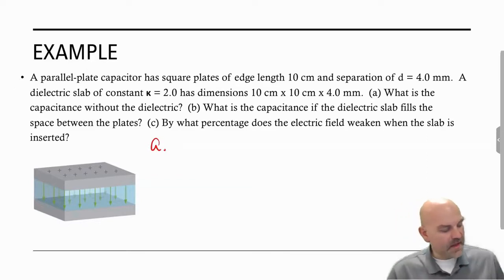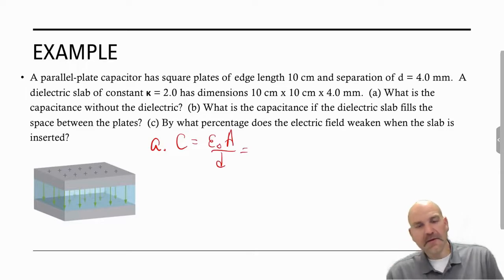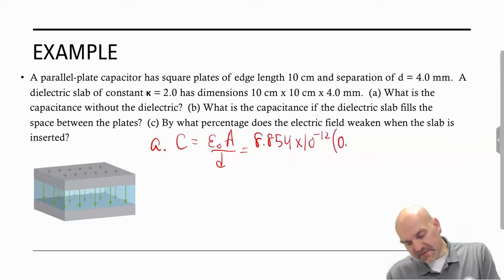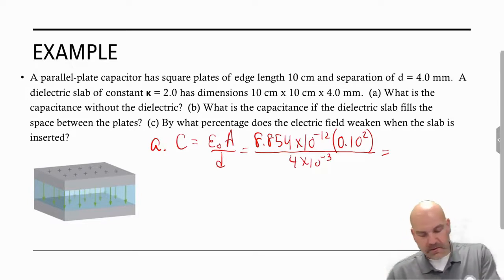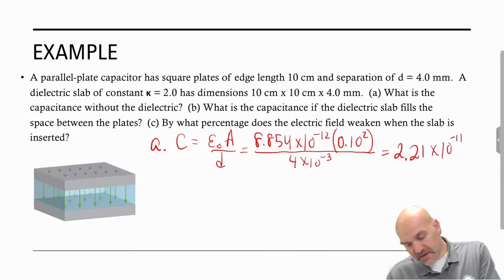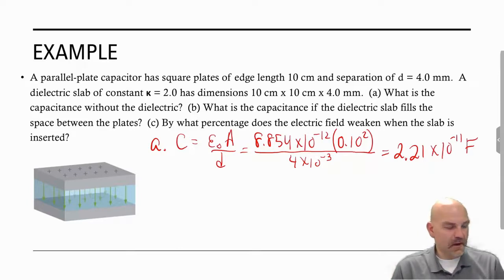Part A, very simple. It's what we did in the last video. Capacitance is equal to epsilon naught A over D. So 8.854 times 10 to the negative 12 times A, which is 0.10 squared, divided by 4 times 10 to the negative 3. So our capacitance without the dielectric is 2.21 times 10 to the negative 11th farads.